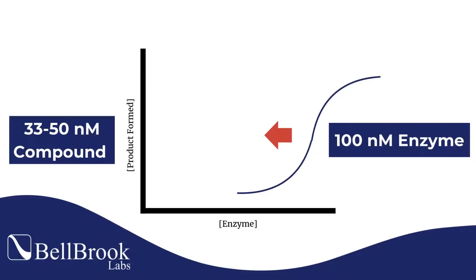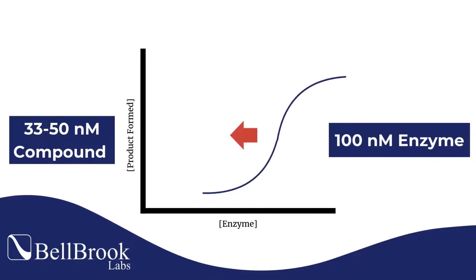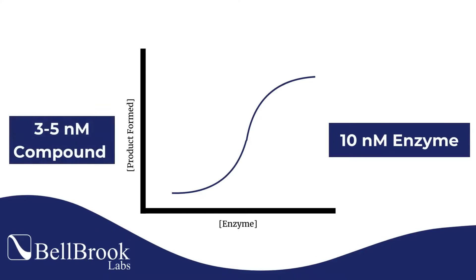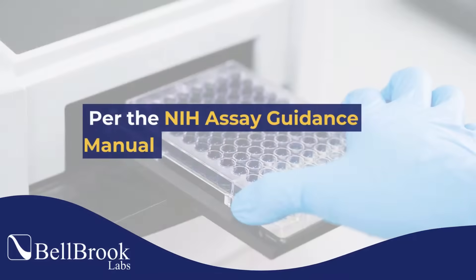Let's shift the amount of enzyme 10 times to 10nM. Now we can accurately measure 3-5nM IC50s. This is critical for rank ordering potent compounds.